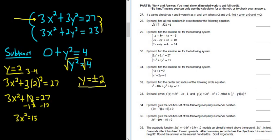Almost there. Now we'll just divide both sides by 3. So divide by 3, divide by 3. So we have x squared equals 5.